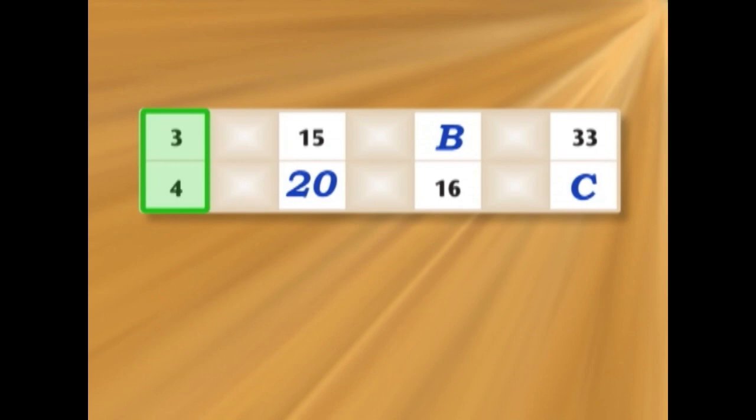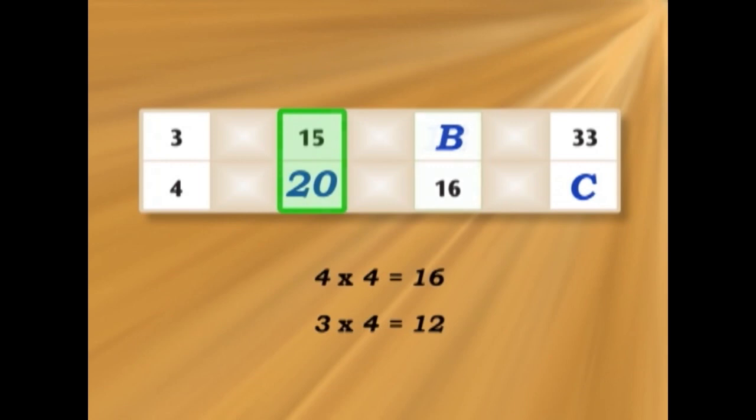How many times do you have to multiply 4 to make 16? 4. So let's multiply 3 by 4 in the same way. 4 times 3 is 12. So 3 over 4 is the same as 15 over 20 is the same as 12 over 16.